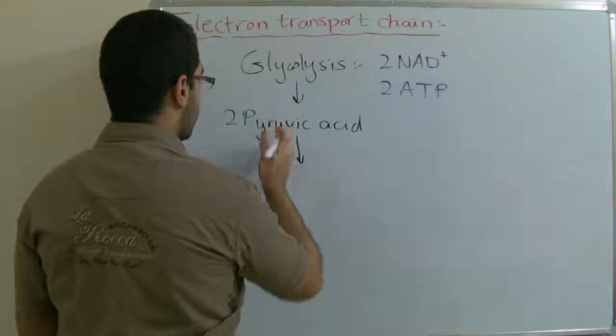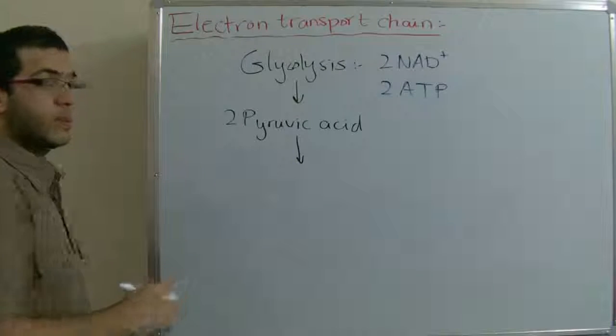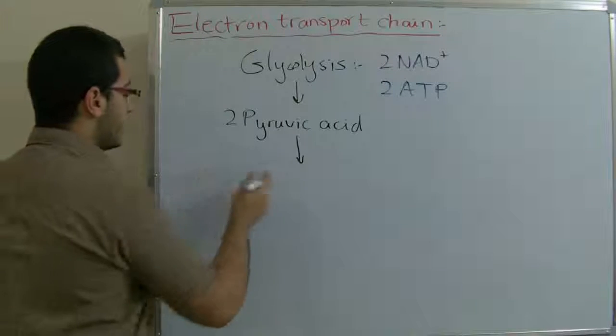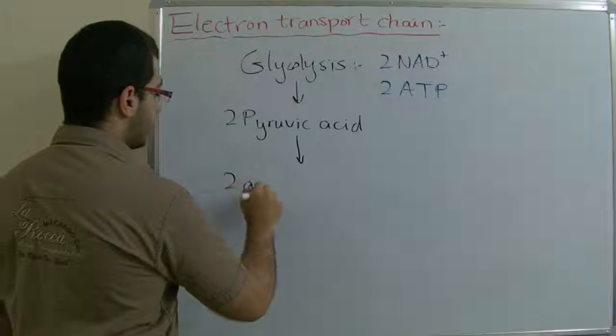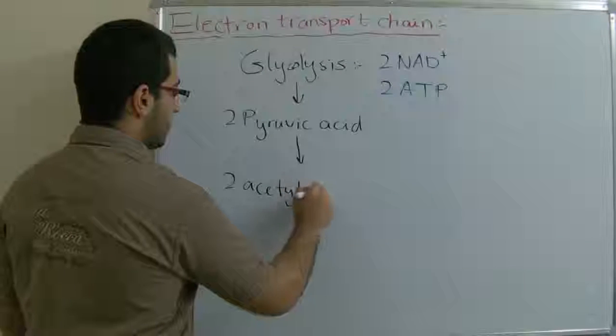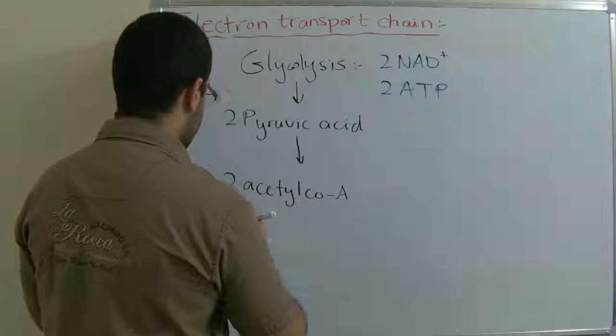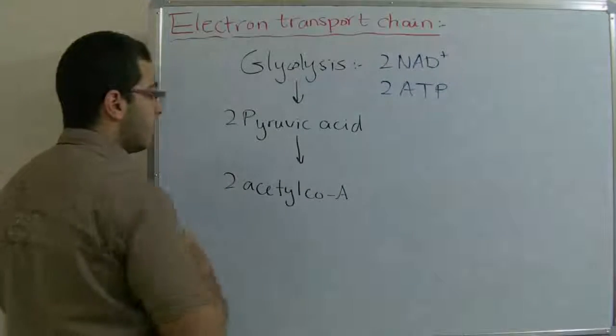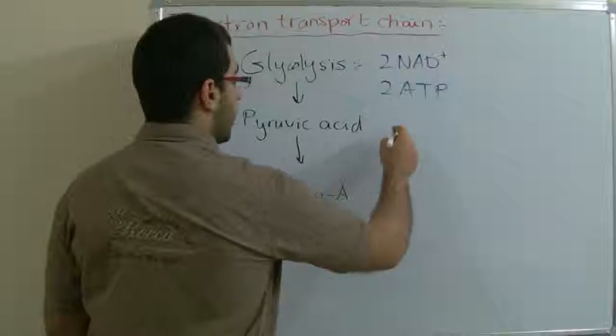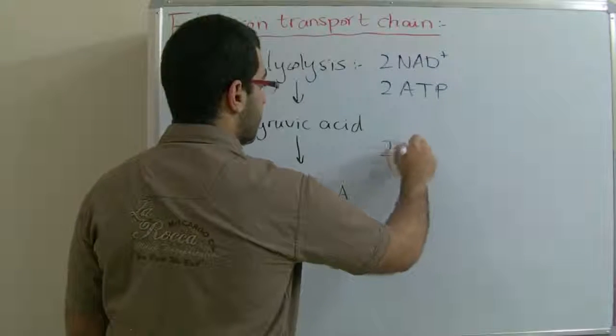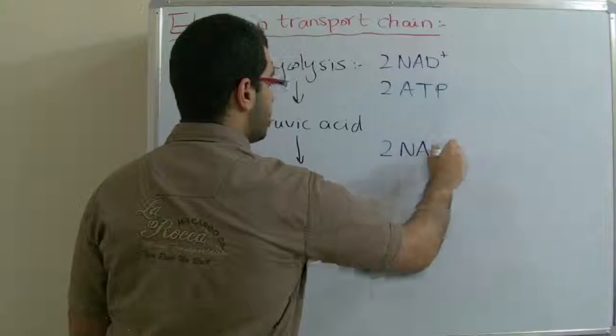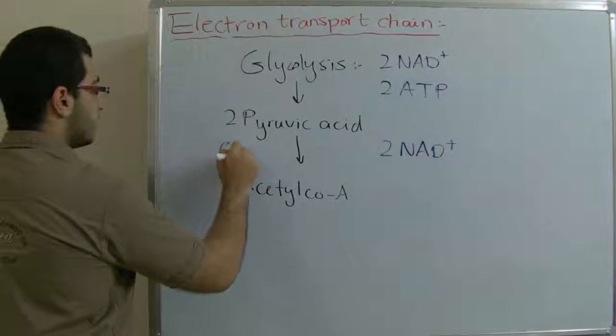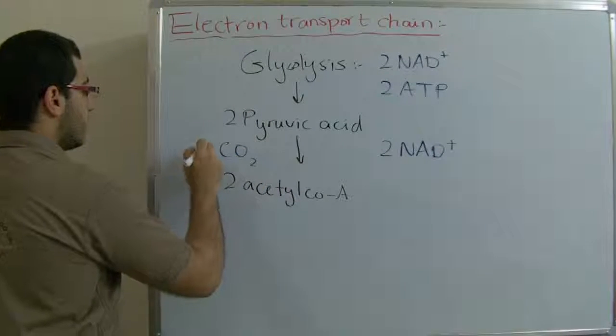The two pyruvic acid molecules at the first part of the Krebs cycle are changed into two Acetyl-CoA and during this we have two NAD plus produced and two carbon dioxide molecules reduced.